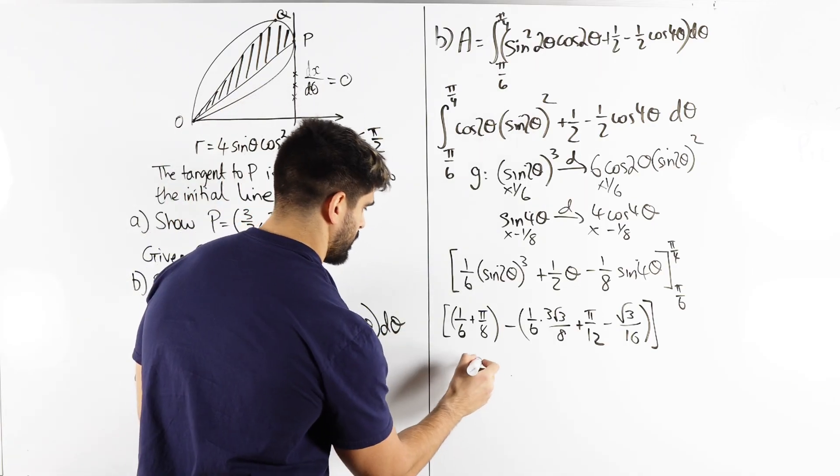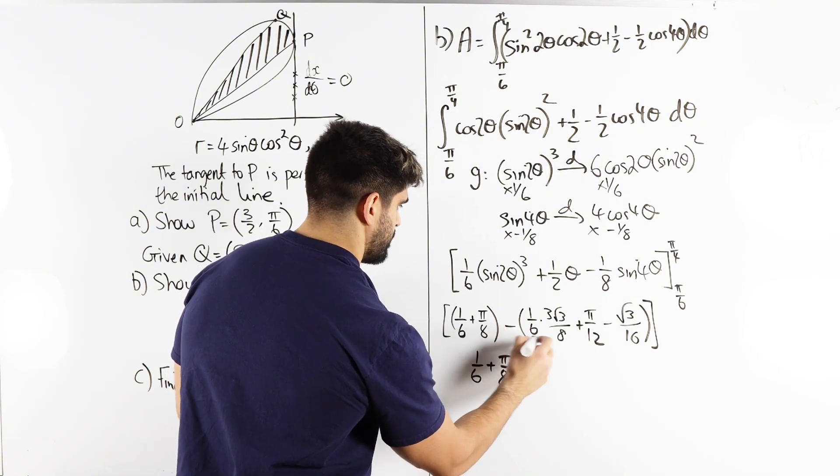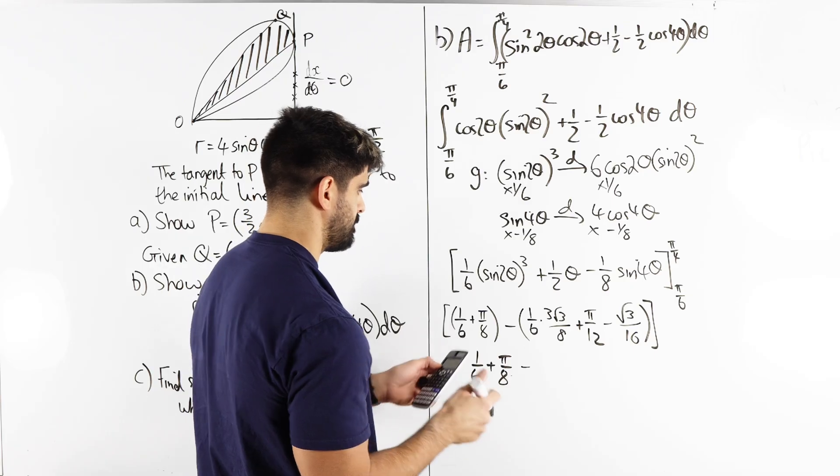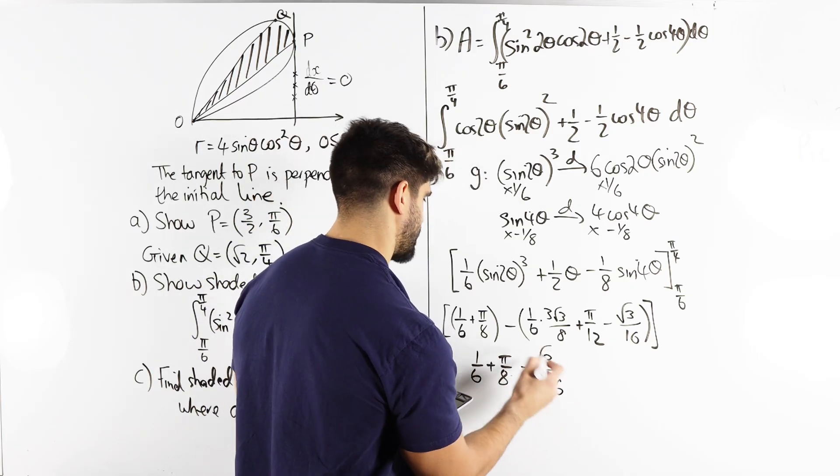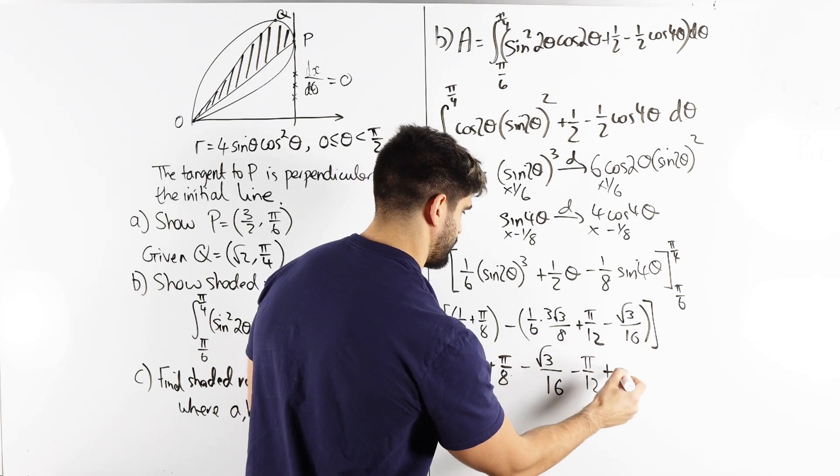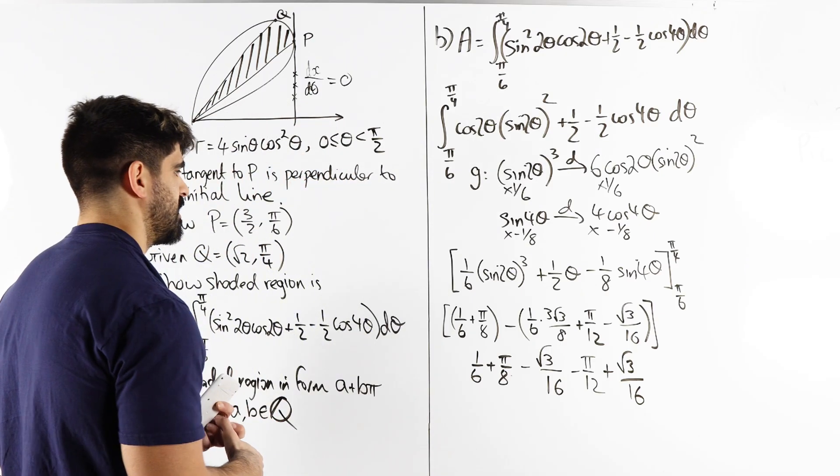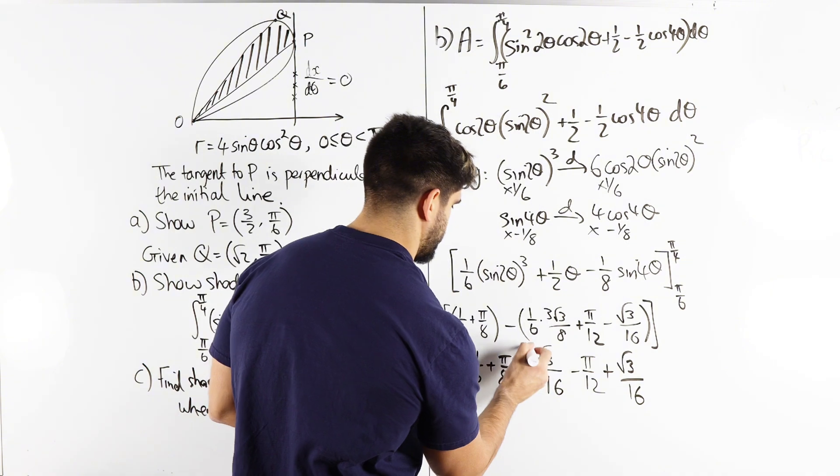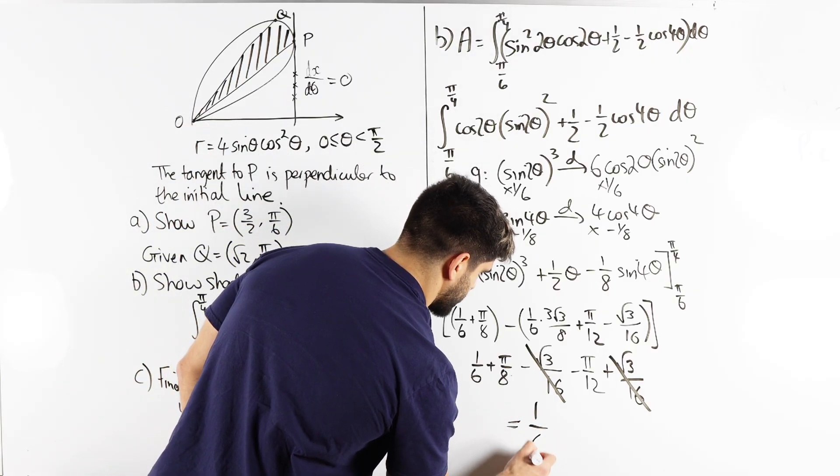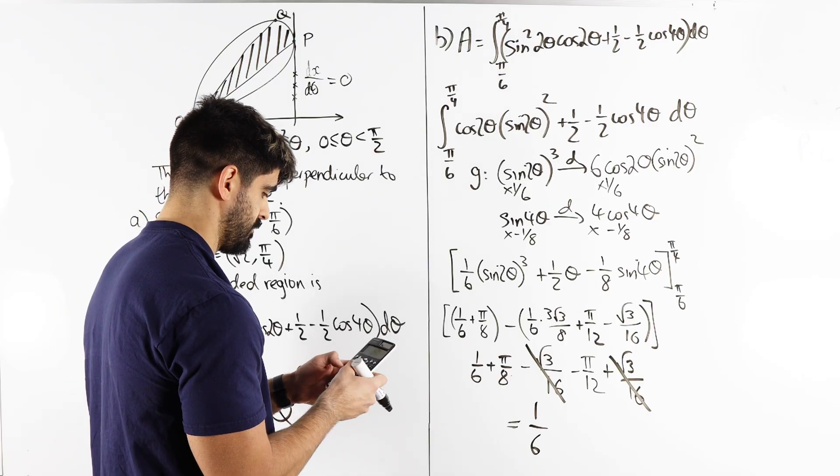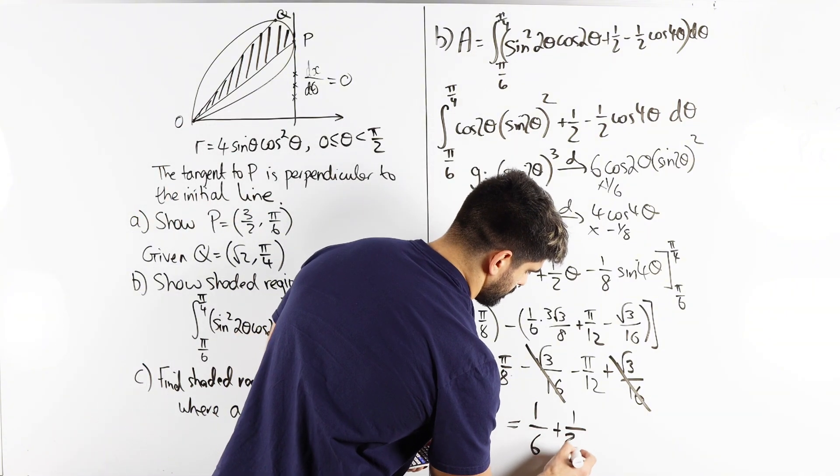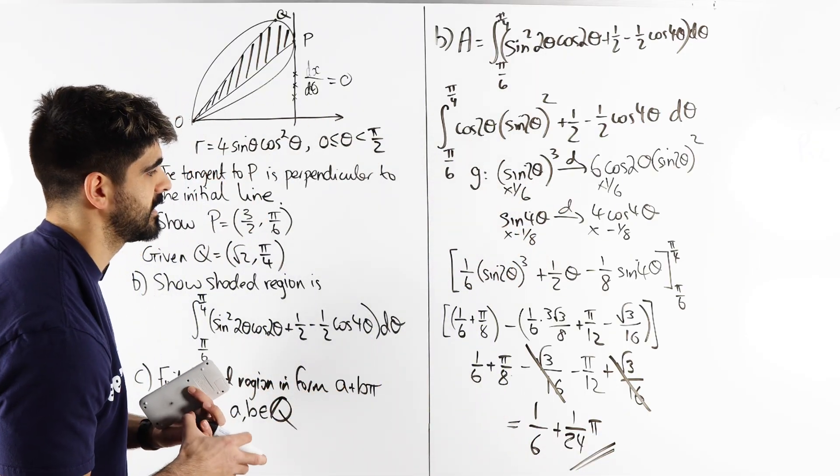Okay so we have one sixth plus pi over eight minus three root three over eight times one over six, this is where I make most of my mistakes, minus pi over twelve and this becomes plus root three over sixteen, which is actually really nice, the root three over sixteen has cancelled, there was actually no root three over sixteen in the answer, so this gives me hope that I've done this correct, because I don't know where this question is from. So we have one sixth pi over eight minus pi over twelve, one eighth, one eighth minus one twelfth, so one over twenty four.